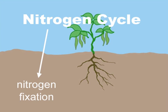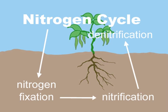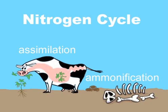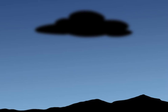There are three main steps of the nitrogen cycle: nitrogen fixation, nitrification, and denitrification. In addition to the three main steps, there are two more that are also involved: assimilation and ammonification.